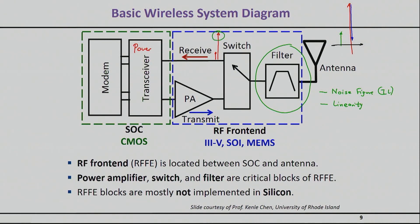Making this filter more selective directly affects how much power you're going to spend for your receiver — everything is interlinked. The selectivity of the filter, which basically means the order of the filter, directly affects the requirement of the rest of the chain and therefore how much power you have to spend. It's far too common for people to wonder why a fifth order filter was specified instead of a fourth — it's not because somebody liked the 40 dB isolation, it's because somebody had to make this thing work for two years with a coin cell battery.